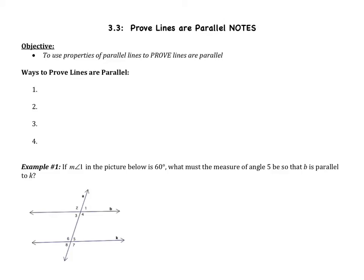So far, in section 1, we learned about the special types of angles: the consecutive interior, the corresponding, the alternate interior, and the alternate exterior. Then, in section 2, we learned the properties of those angles when we have parallel lines that are cut by a transversal.